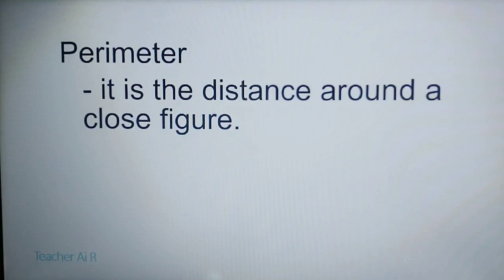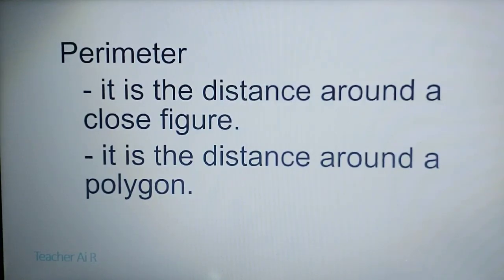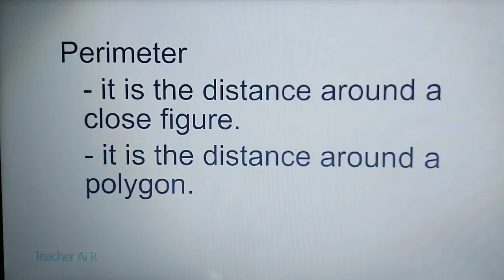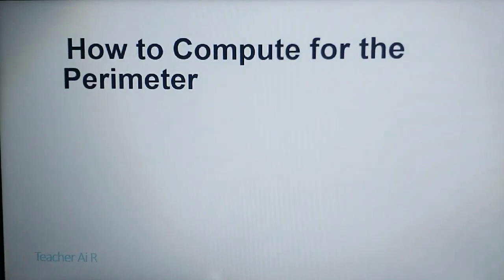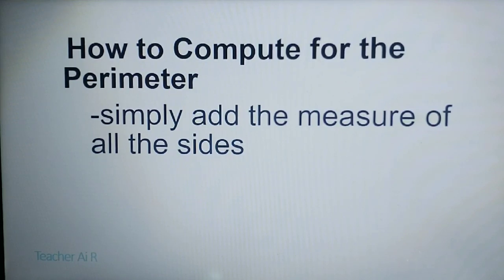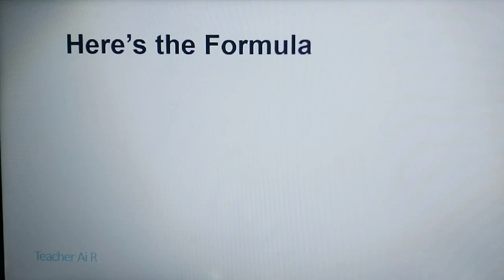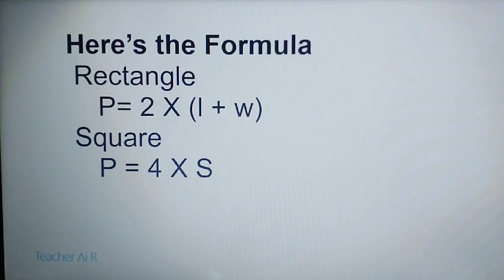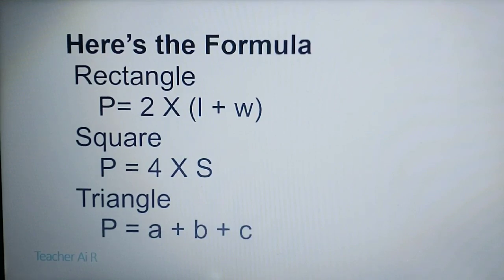Perimeter and area. When we say perimeter, it is the distance around a closed figure, or it is the distance around a polygon. In this video, I am going to discuss only the perimeter of square, rectangle, and triangle. So how to compute for the perimeter? Simply add the measure of all the sides. Here are the formulas: for rectangle, P equals 2 times length plus width; for square, P equals 4 times S (side); and for triangle, P equals A plus B plus C.